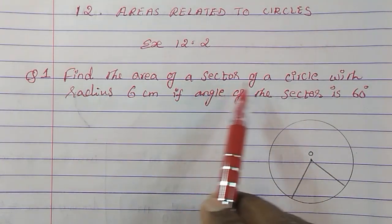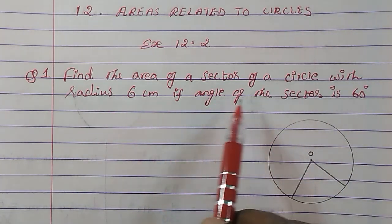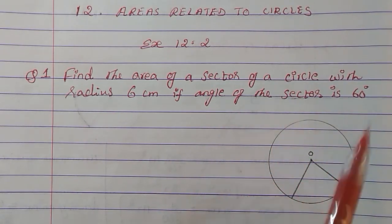Today we are going to study chapter 12, areas related to circles, exercise 12.2, question 1. Find the area of a sector of a circle with radius 6 cm if angle of the sector is 60 degrees.